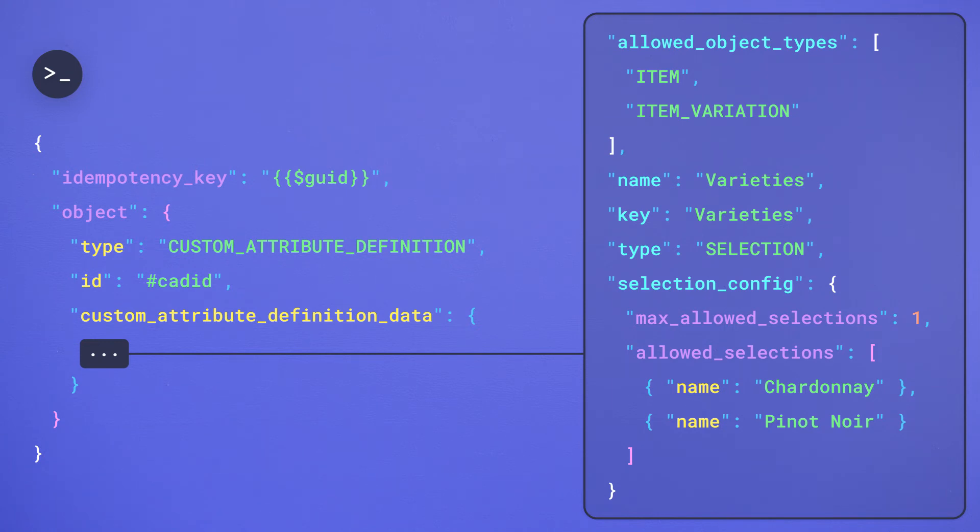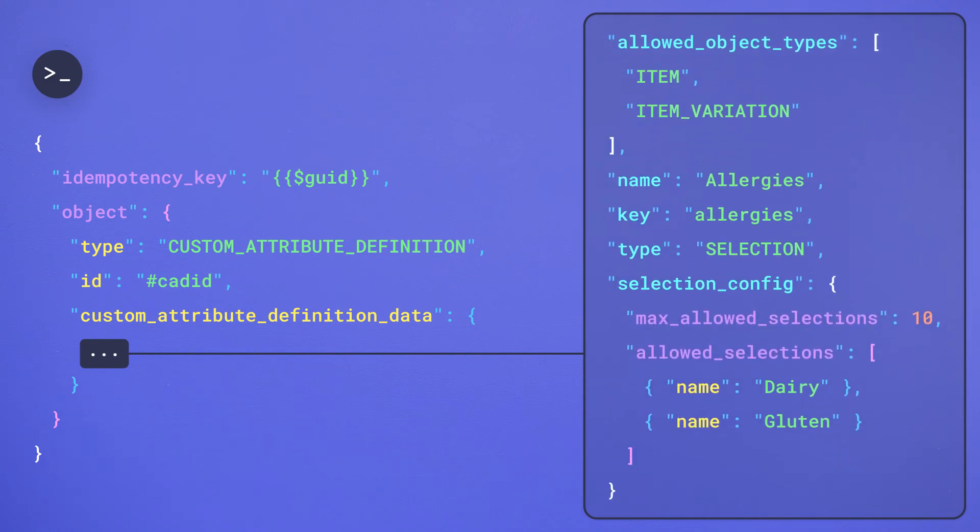On the other hand, an example of a multi selection would be something like allergens where a restaurant could select both dairy and gluten for a menu item that contains both.